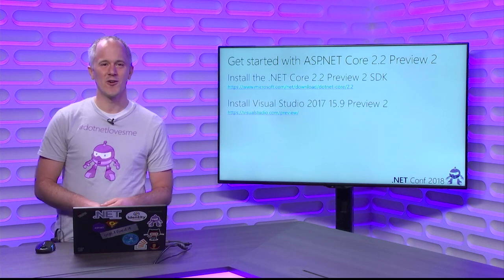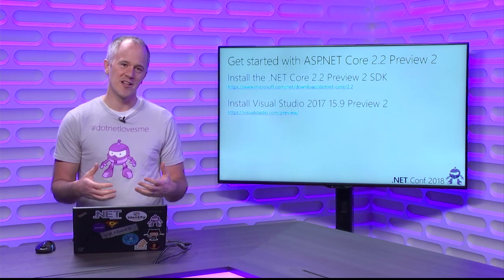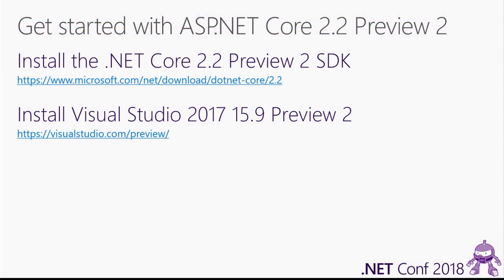To get started with ASP.NET Core 2.2 Preview 2, you'll want to download and install the latest .NET Core SDK — the 2.2 Preview 2 SDK — from the .NET website. If you're on Windows and using Visual Studio, you'll want the latest preview release, Visual Studio 2017 version 15.9 Preview 2, available at visualstudio.com/preview. All of these installations are side-by-side with existing stable releases, so you can install them without fear of impacting your development workflow.